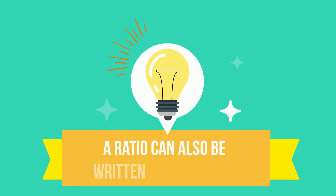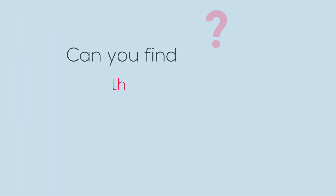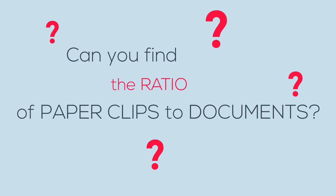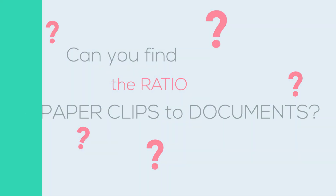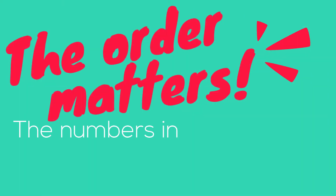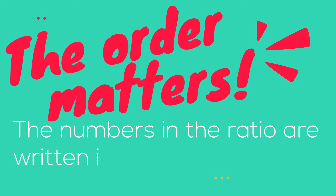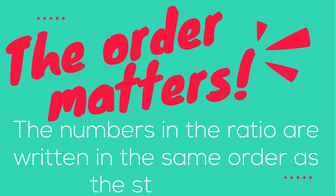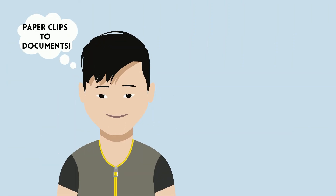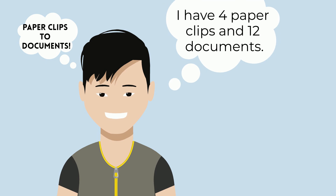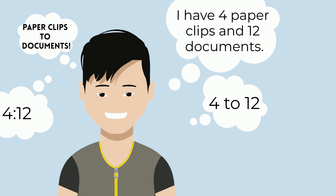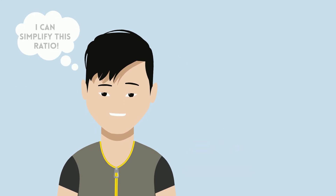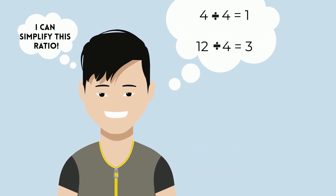Ratios can also be written as fractions. Now let's try to find the ratio of paperclips to documents. Notice that the order has changed, and the order matters in a ratio. It's easy to simplify if we divide by 4.